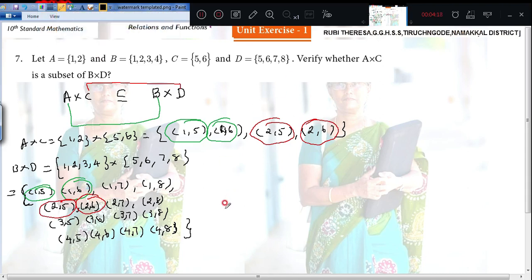So what you have to write? A cross C is a subset of B cross D. Do you follow? A cross C is a subset of D cross D.